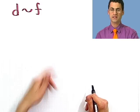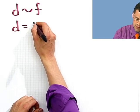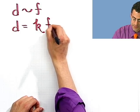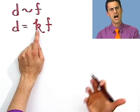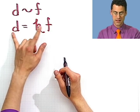Now what does it mean for two things to be directly proportional? It means that d is equal to some constant times f. So the question is, what's that constant? What's that number that actually makes these things related?